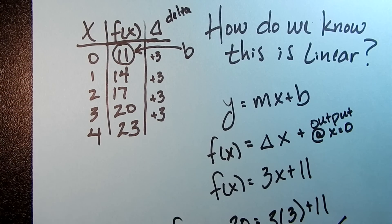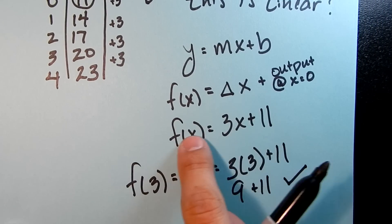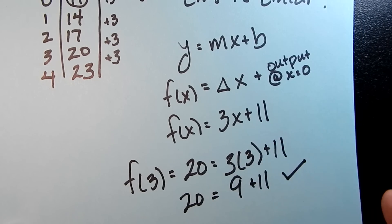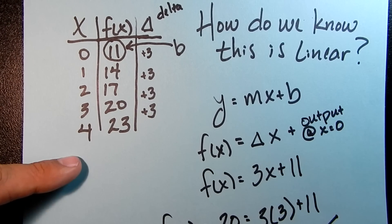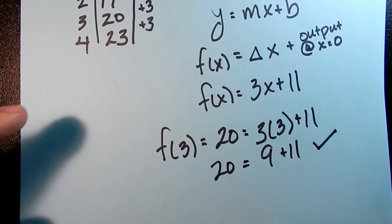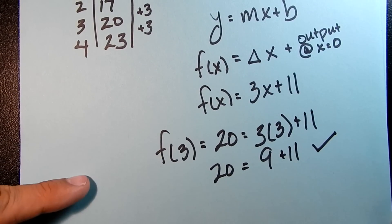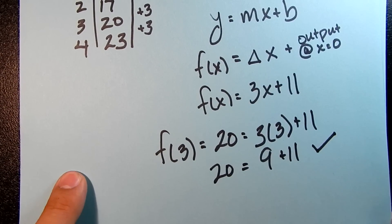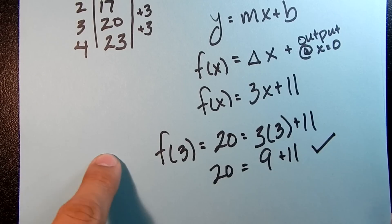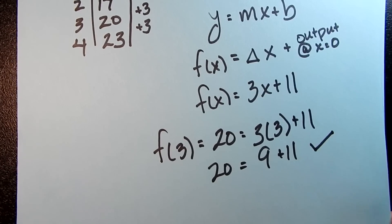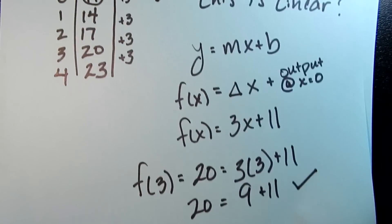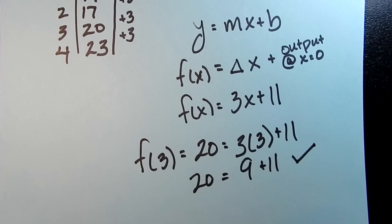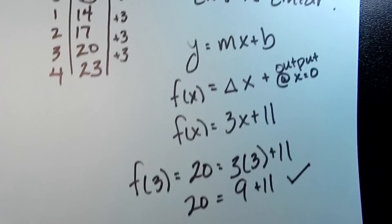And the explicit form is useful. This form here is useful because, let's say I want to find the 25th input. So if I want to extend the table clear down here to the 25th input, so when x is 25, find f(x), I can do that with this rule. I don't have to have the whole table built in order to get to it. You do need that for the recursive rule.